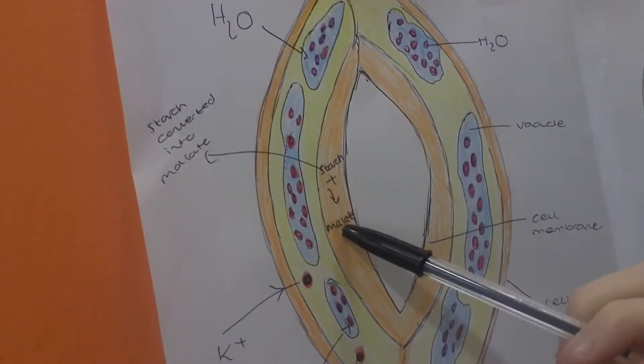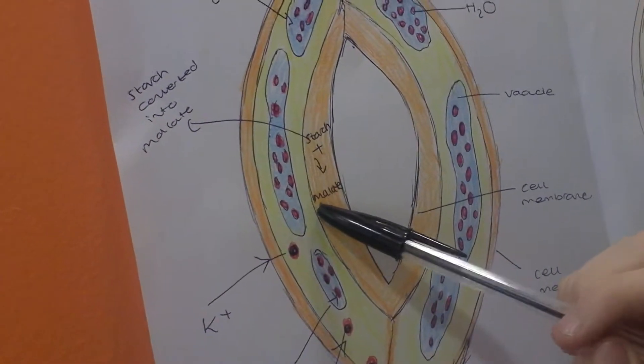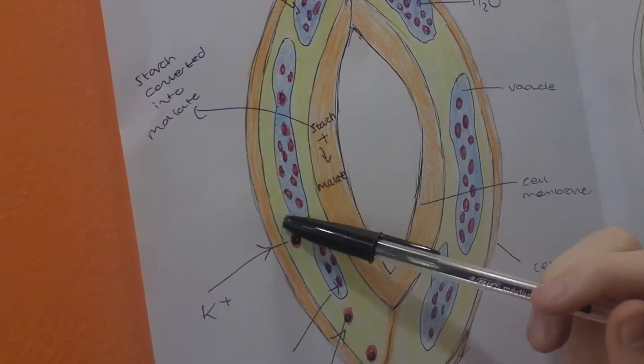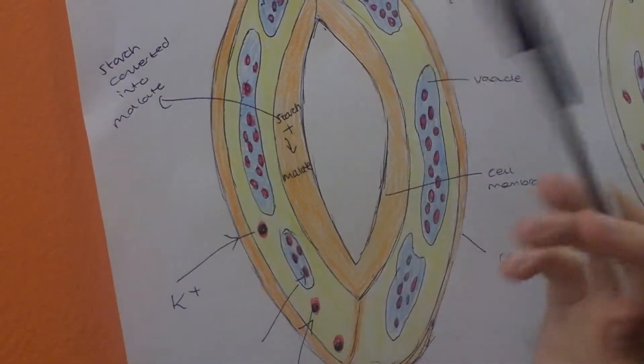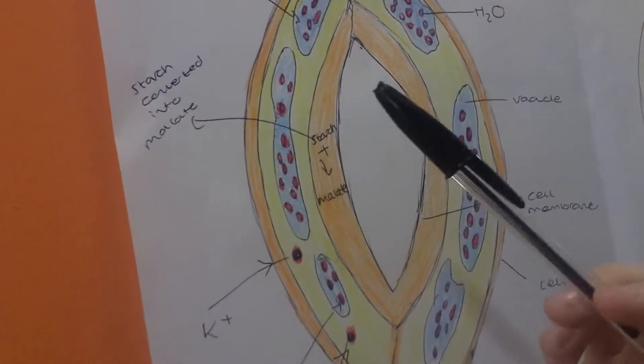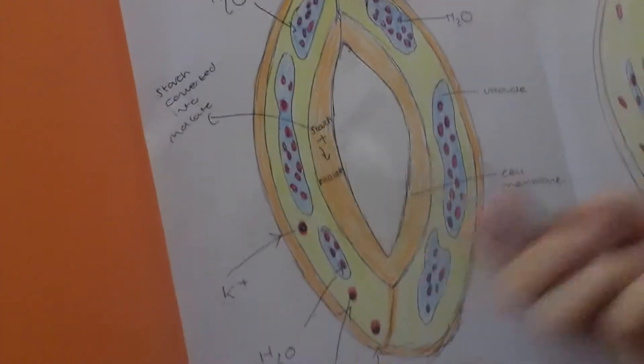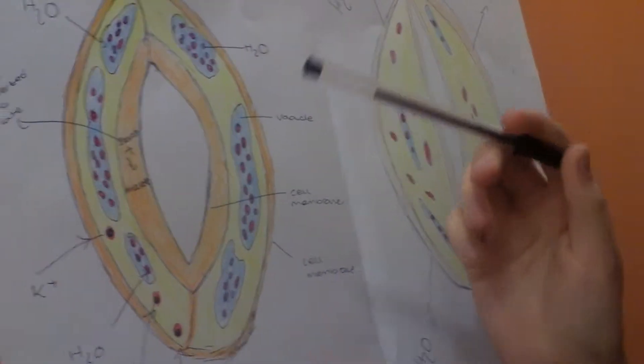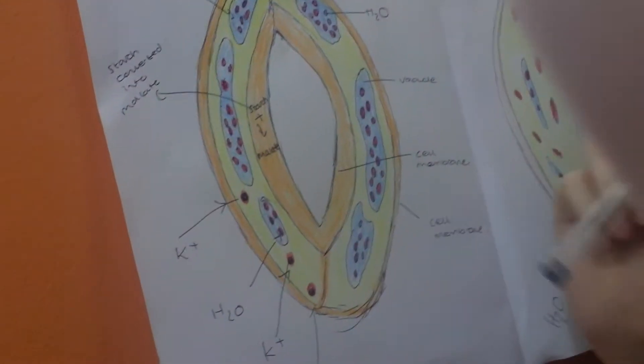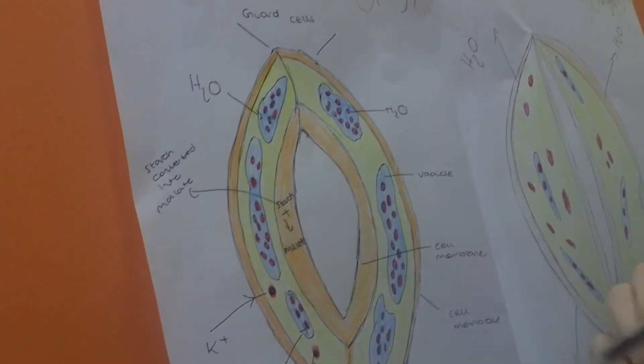Starch is converted into malate ions inside the guard cells. Both the malate ions and the potassium ions lower the water potential inside the guard cells. Water moves into the guard cells by osmosis, down a water potential gradient.